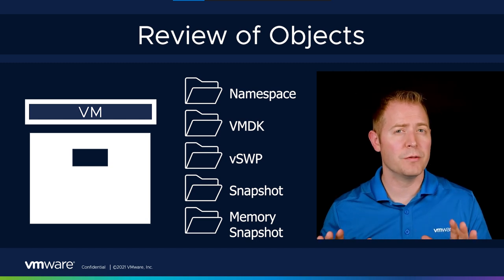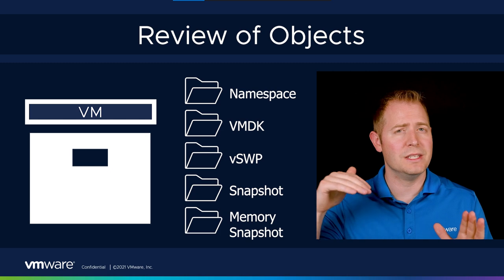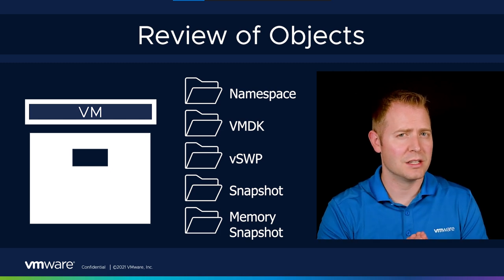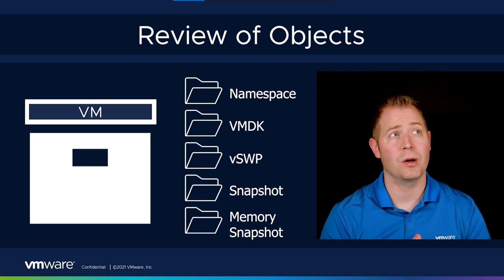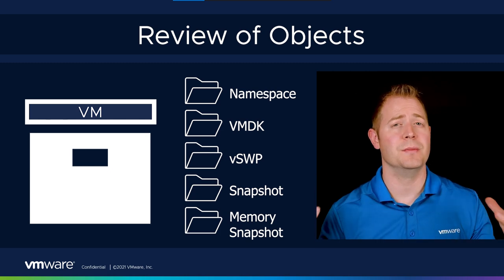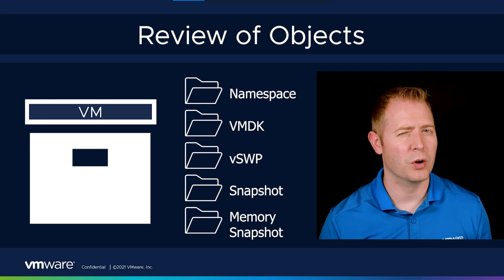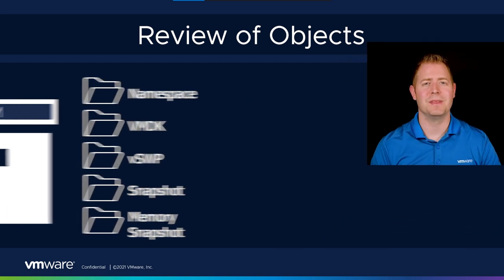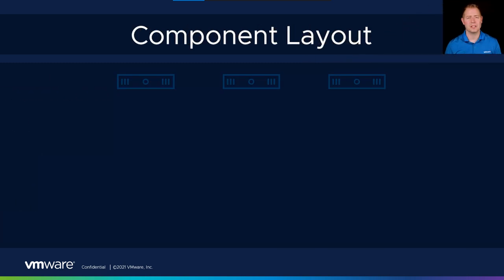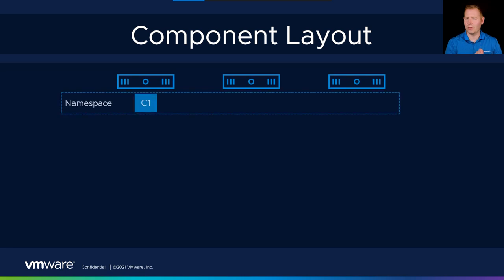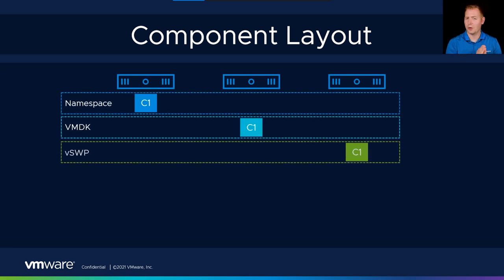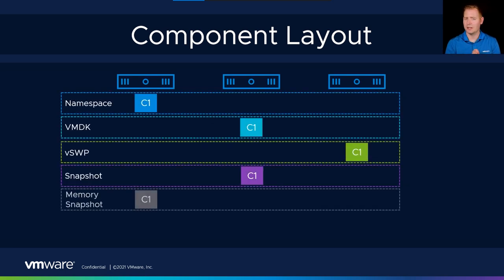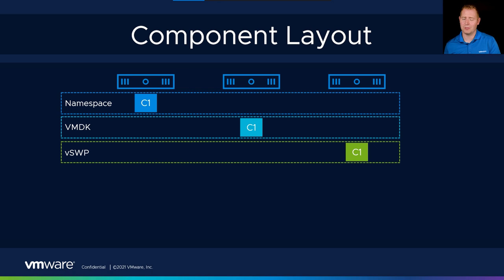In a future video, we'll do a deeper dive about data on disks, and we'll start talking about when we have large VMDKs, what does that look like from a component perspective? But for right now, we're going to keep things nice and simple and just say that we've got one component per each object. For the snapshots, if we haven't created snapshots, we wouldn't have snapshot objects.